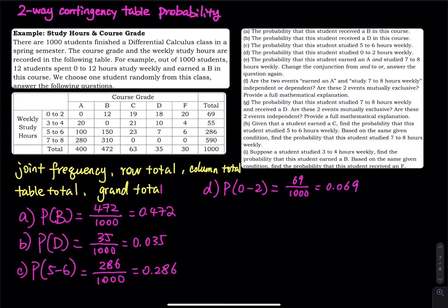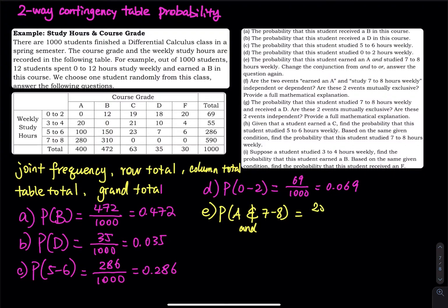Starting in Part E, we have a compound event. We have A AND 7 to 8 hours. The symbol means AND. When you see the word AND, you have to look for a joint frequency. Which joint frequency corresponds to A and 7 to 8? That will be column 1 down to row 7 to 8, which is 280. That corresponds to grade A and 7 to 8 hours. So 280 goes in the numerator and the grand total goes in the denominator: 0.280. You just pick a number from the joint frequency.